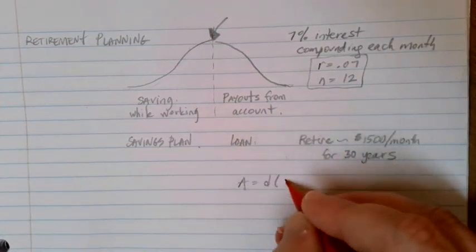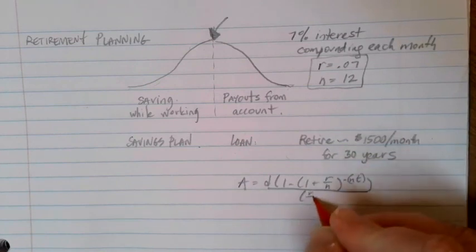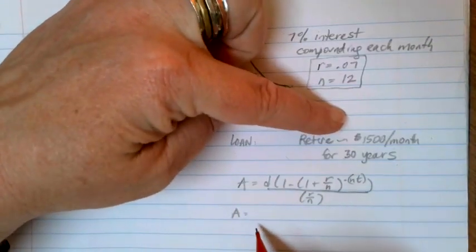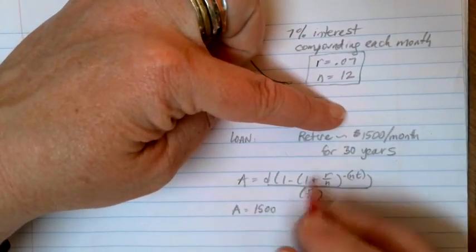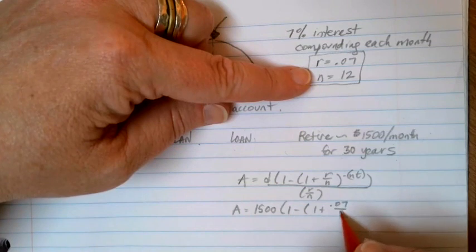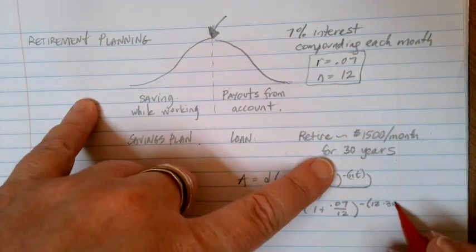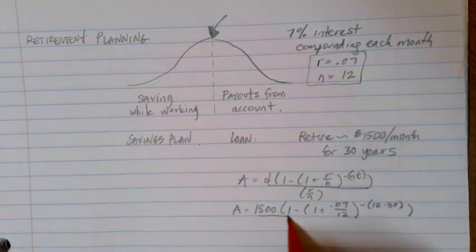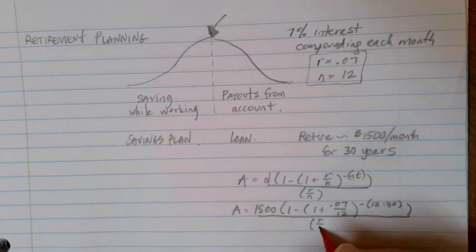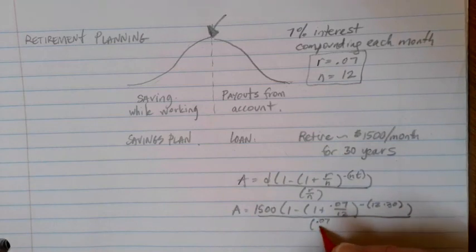So here's my loan formula. And putting in the information, I want to find A. I want my monthly payment to myself to be $1,500. My interest rate is 7%. So I'm going to write that as 0.07 over 12. And in this case, I'm hoping to live 30 years after I retire. So that's what I'm going to be planning for. We need to have some sort of a monetary goal to shoot for here. And we're going to divide by R over N. But of course, we know what that is. We want 0.07 over 12.